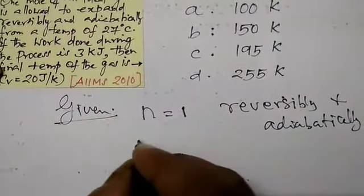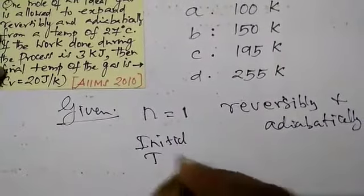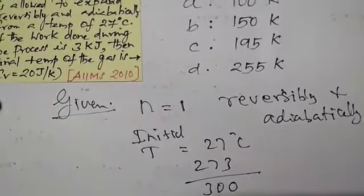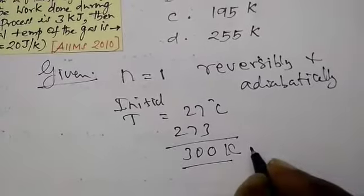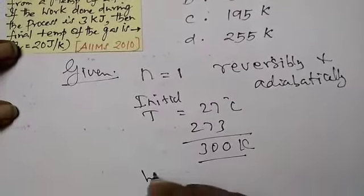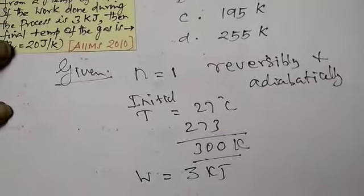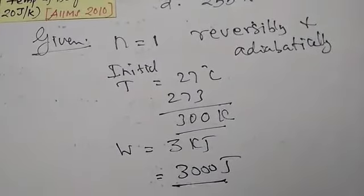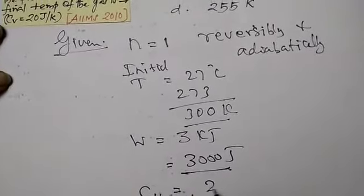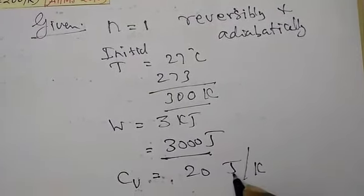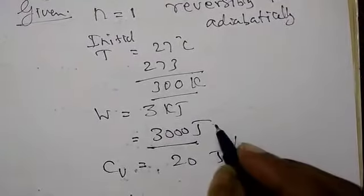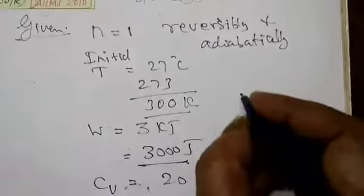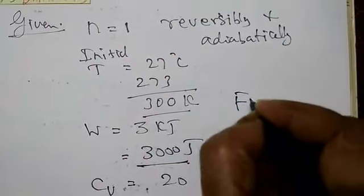Then, the initial temperature is 27 degrees centigrade. You are adding Kelvin because you have to add it, 273. The temperature initial is 300 Kelvin. And the work done during the process, W is given, it is 3 kilojoule. I want in the terms of joules only. So, it is converted in the form of joules, 3000 J. And then, what is the CV value is given is 20 Joule per Kelvin. Because it is given in joule, I have taken the work done in terms of joules. Now let us see the formula. What they are asking is the final temperature?